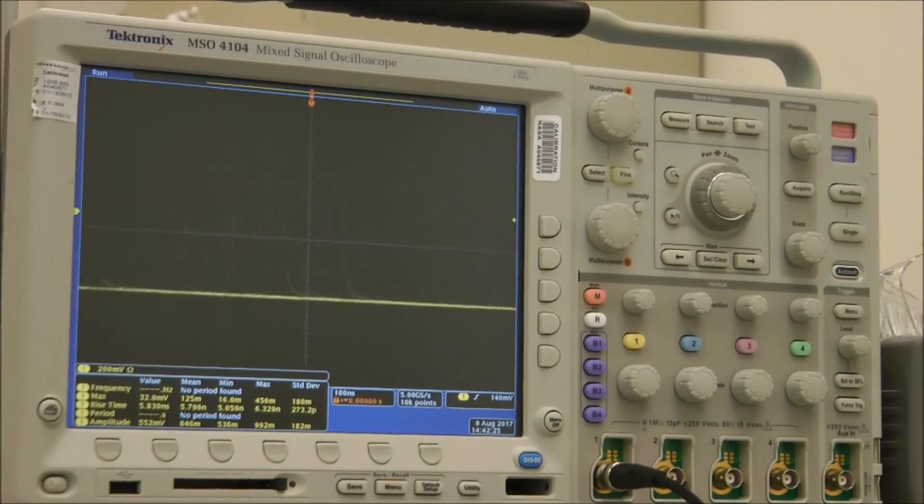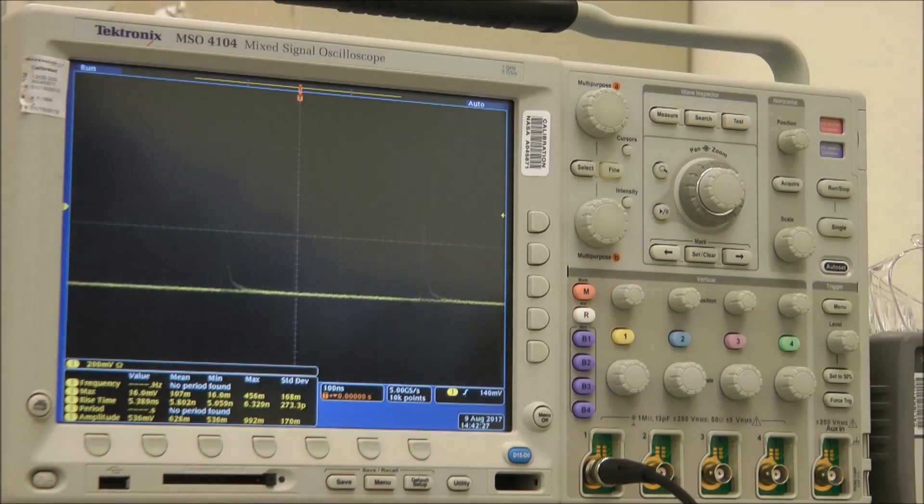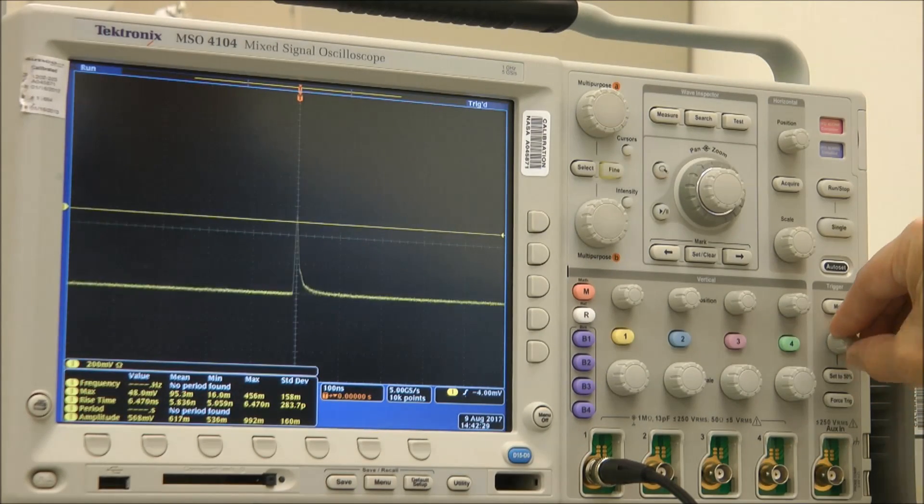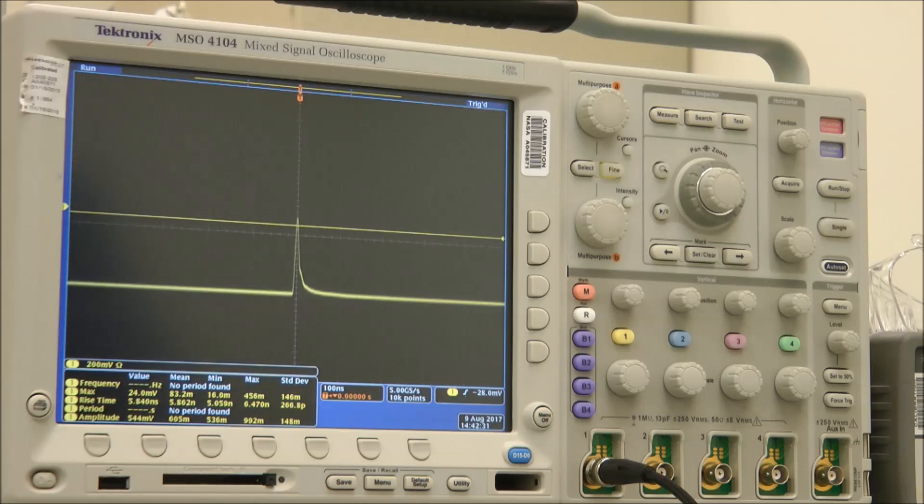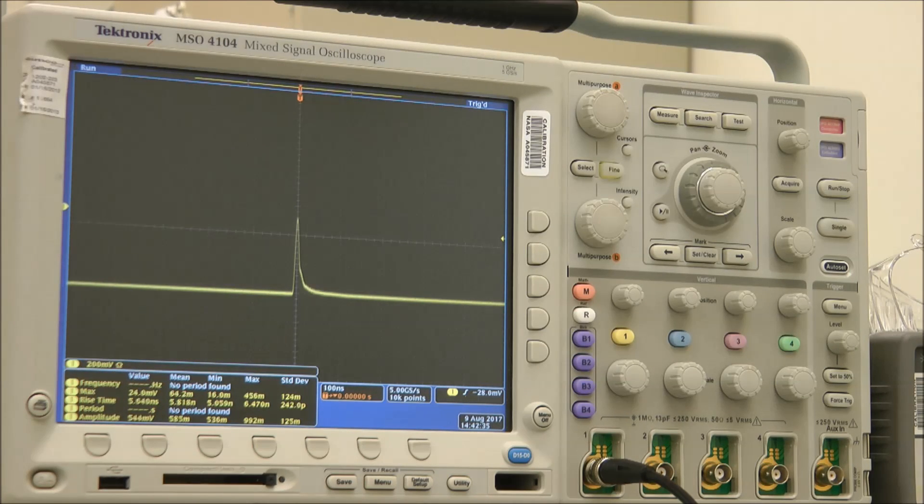Now I dropped it low enough that it lost its trigger. So let me move the trigger level down here. And you can see now, while the pulse is still there, it's dropped now into about two and a half divisions, which is about 500 millivolts into a 50 ohm load. So it cut it in half.